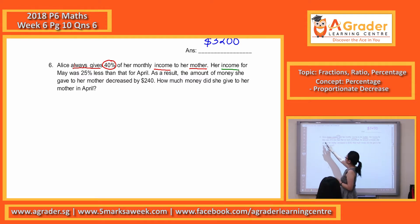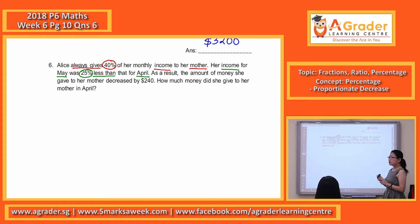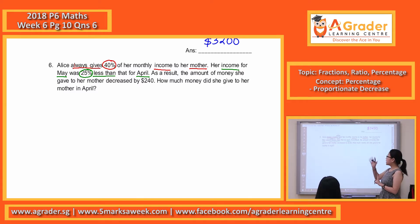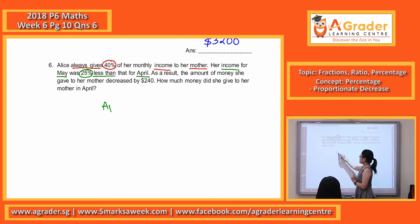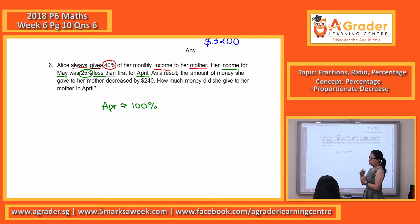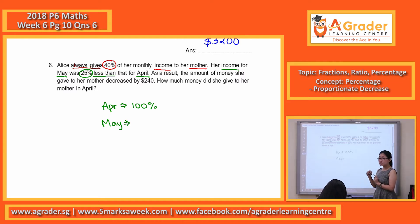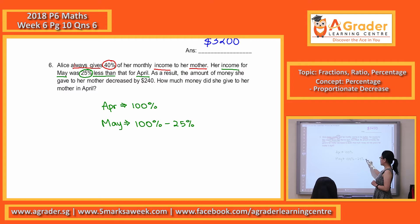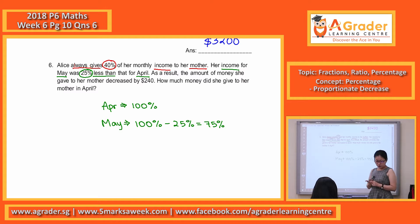The income for May was 25% less than that for April. So remember, in this sentence, May and April — for these two items, April, the one at the back, is always our 100%. So writing it down: April = 100%. For May, they told us that it's 25% less, so we'll just deduct accordingly. May income will just be 75%.